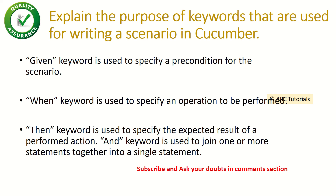Explain the purpose of keywords used for writing a scenario. The important keywords are given, when, and then — used for building the feature file or writing a scenario. The 'given' keyword specifies a precondition for the scenario, the 'when' keyword specifies an operation being performed, and the 'then' keyword tells what the expected output or expected behavior of the application is. Make sure you go through this well and prepare it.